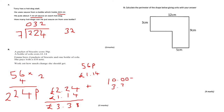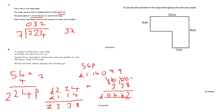Setting up the column subtraction: 0 take away 8 — I can't do that, so I borrow repeatedly. 10 take away 8 is 2; 9 take away 3 is 6; 9 take away 3 is 6; and 0 at the front. The answer is £6.62. Emma gets £6.62 change from a £10 note when she buys 4 packets of biscuits and 1 bottle of cola.